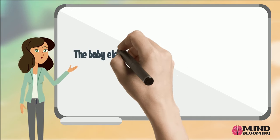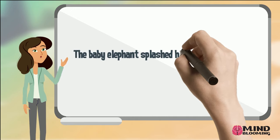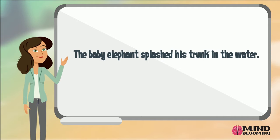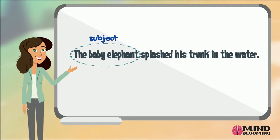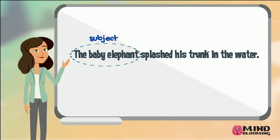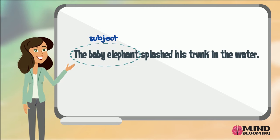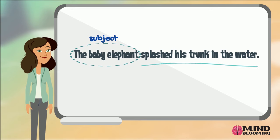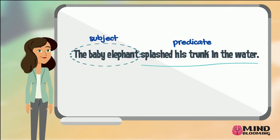The baby elephant splashed his trunk in the water. The subject is the baby elephant because this sentence is talking about the baby elephant. What is the baby elephant doing? He splashed his trunk in the water, so that is the predicate.